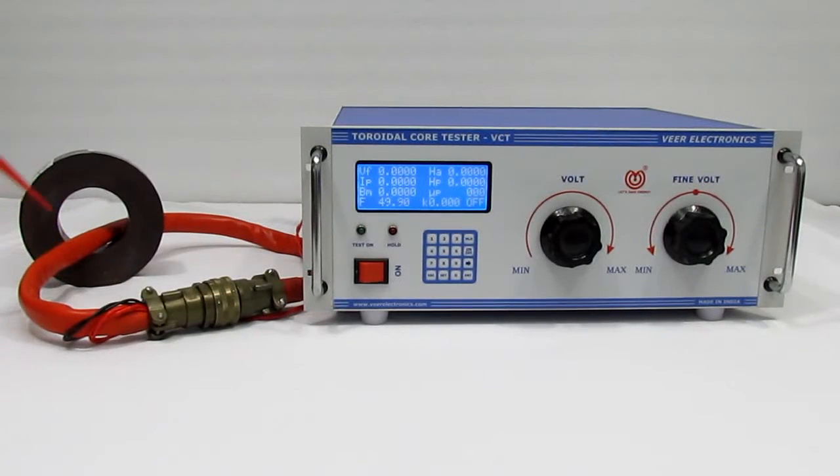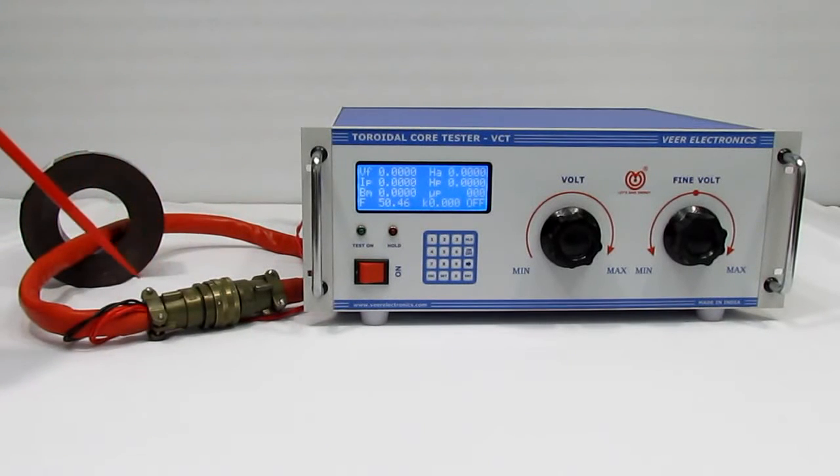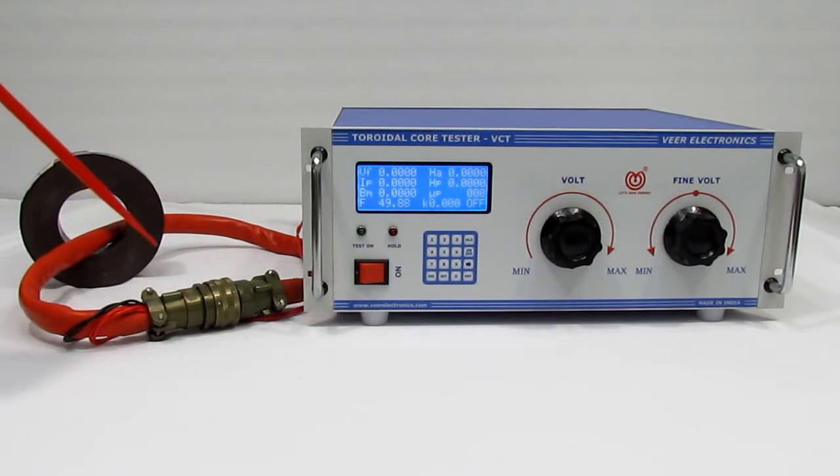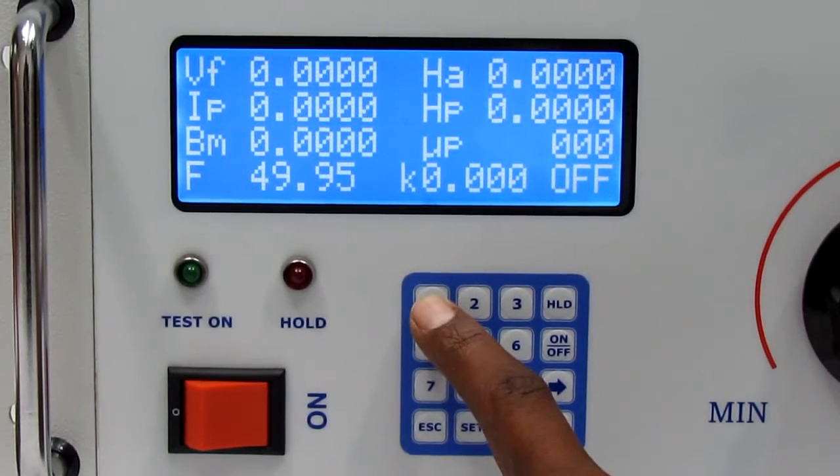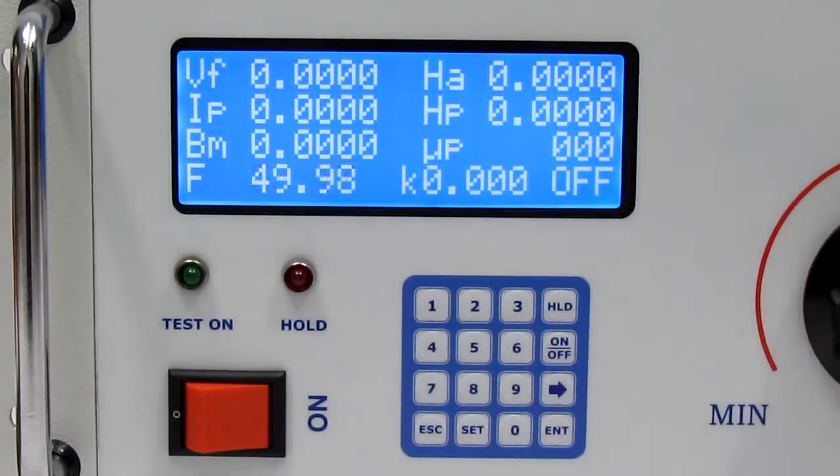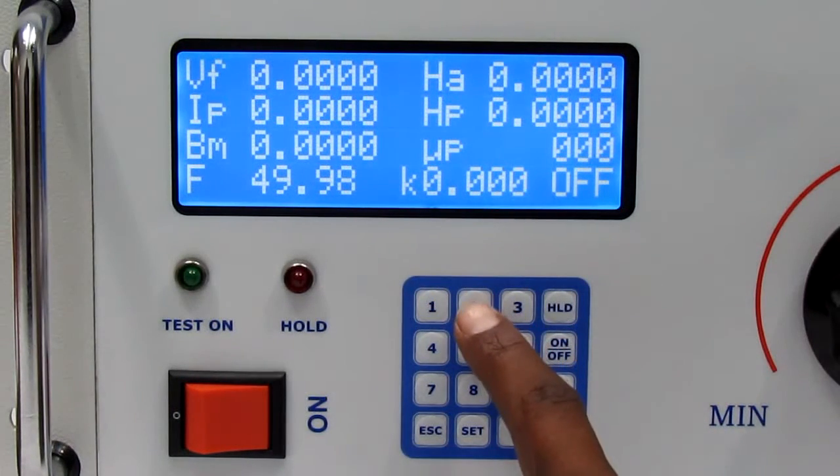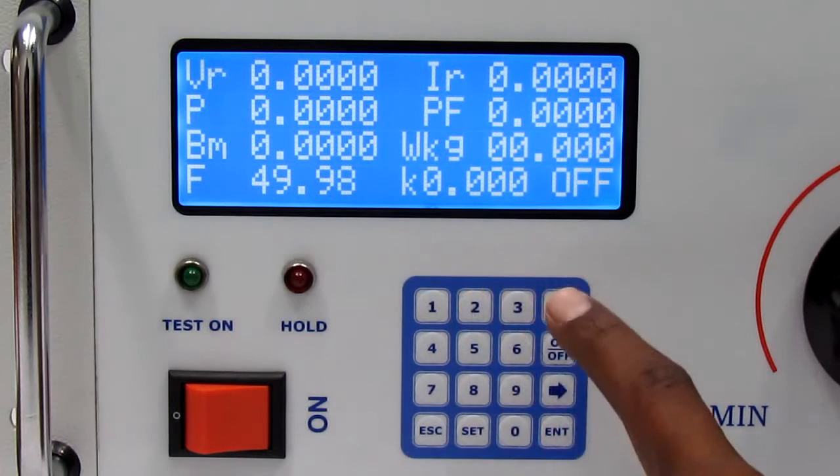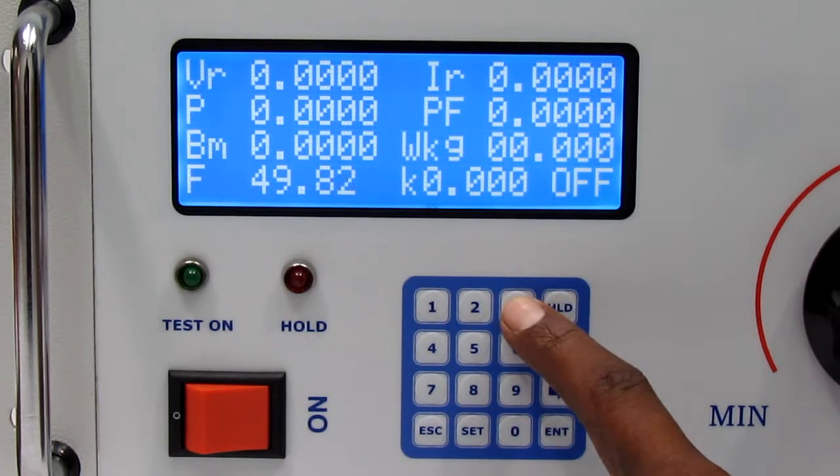This is a 12 turns primary and 12 turns secondary testing jig. Press key to see page number 1. Press key to see page number 2. Press key to see page number 3.